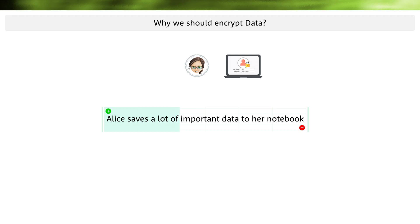What happens now if Alice loses her notebook or it's stolen? Is her data still safe? Well, the thief cannot log on to the operating system. But all data in the notebook is usually stored on one or more hard disks. If this data is not encrypted, the hard disk can be easily removed and read by another PC. Only if Alice encrypts her data explicitly, no one can read her data in case of theft.